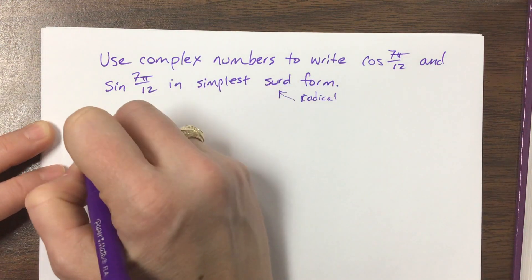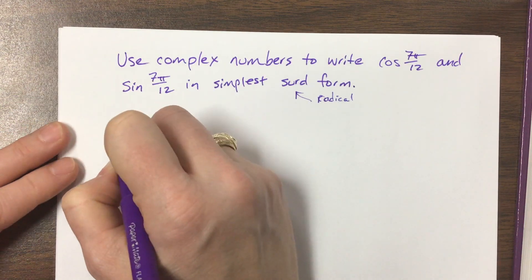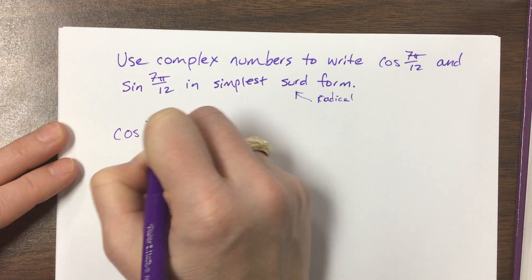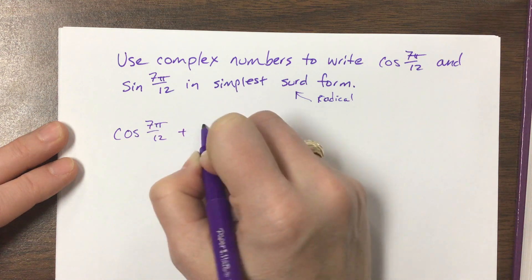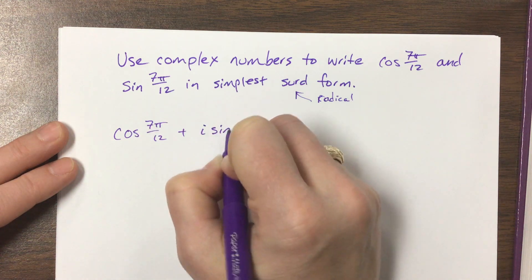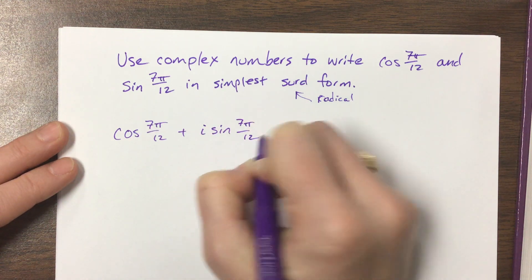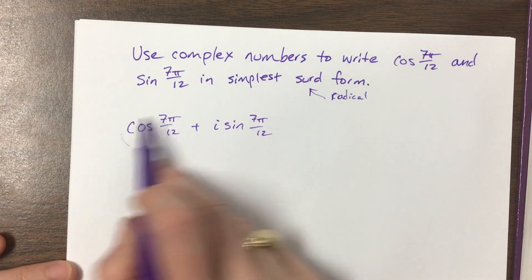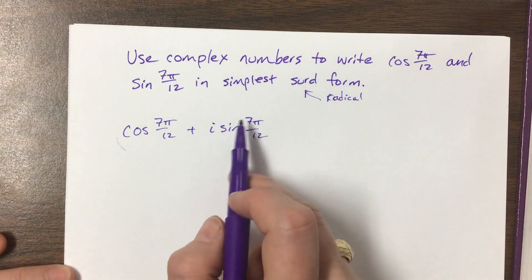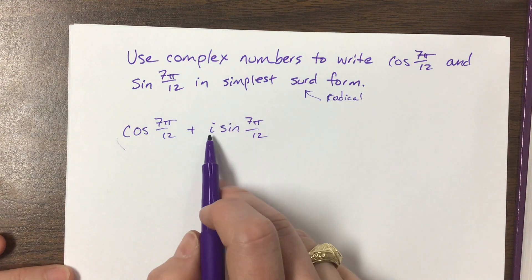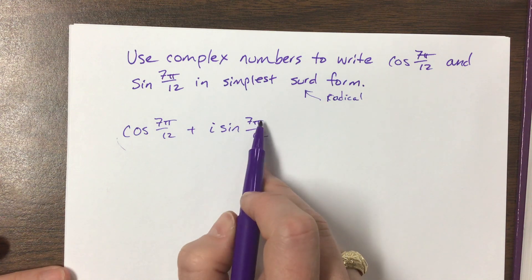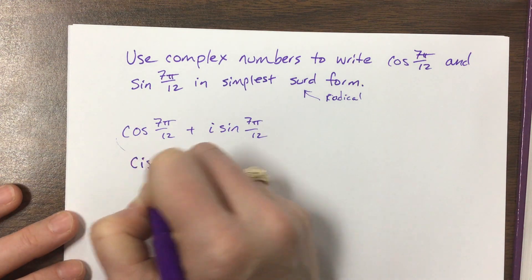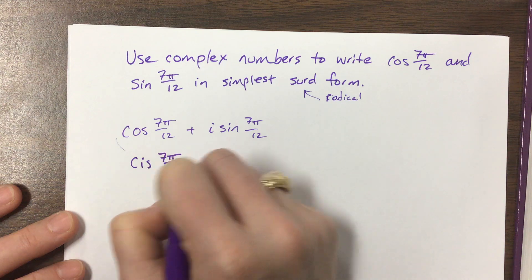So basically, what we want is to use: cosine of 7π/12 plus i sine of 7π/12. The real part will be equal to cosine of 7π/12, and when we manipulate this, the imaginary part will be equal to sine of 7π/12. So this is like saying cis of 7π/12.